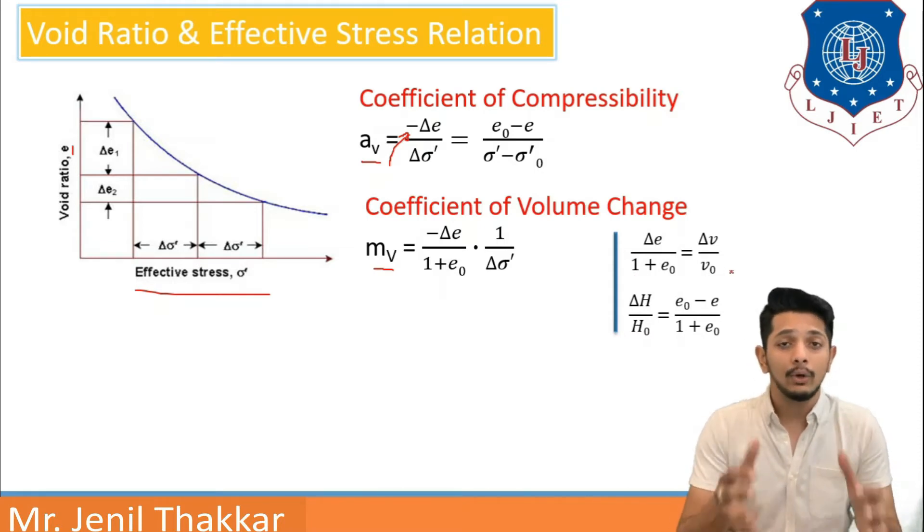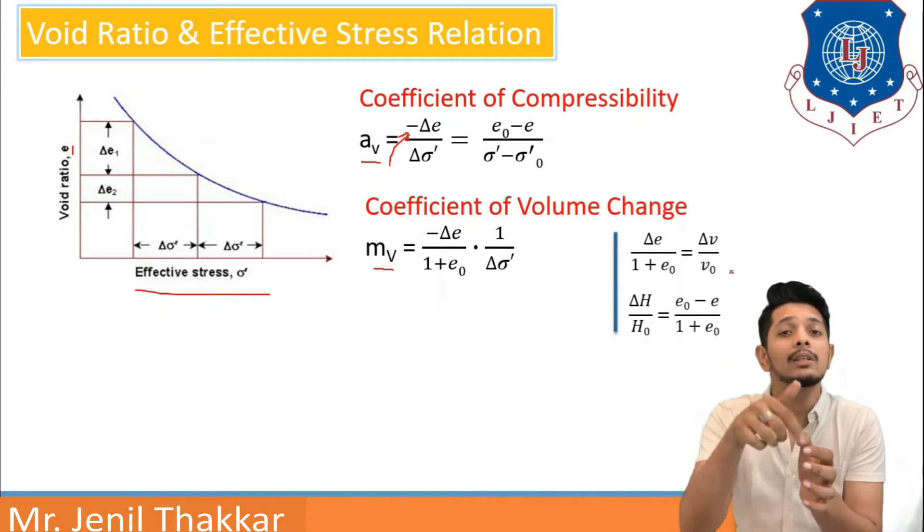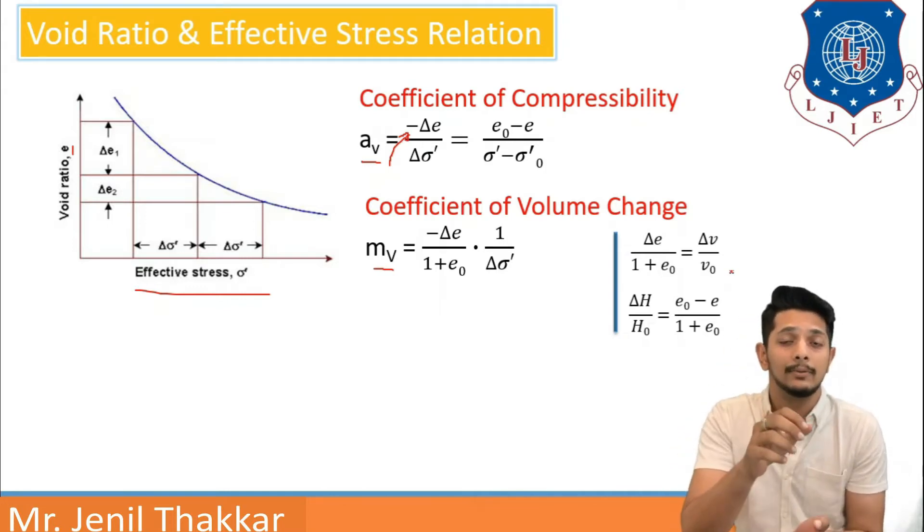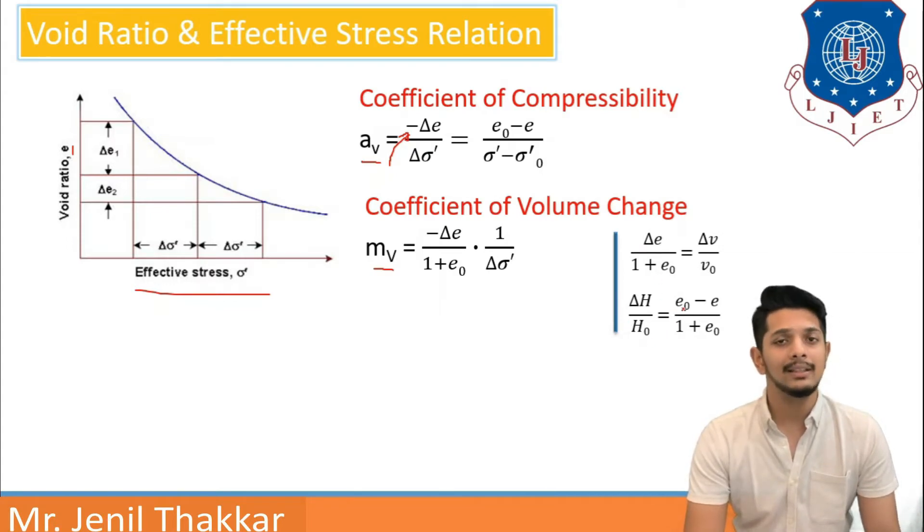If the soil is confined from all sides, after compression there is only one dimension in which it can compress. We can also write delta V by V0 as delta H by H0, that is thickness of the soil or height of the soil, equals delta E or E0 minus E upon 1 plus E0.